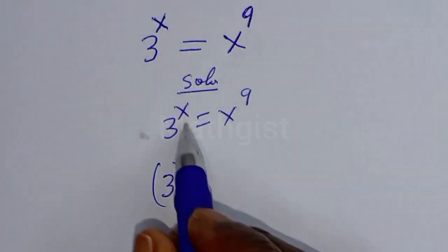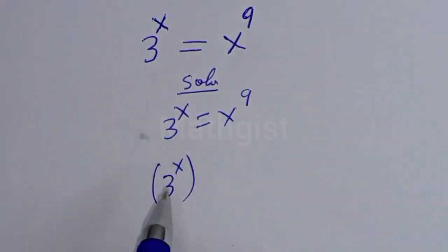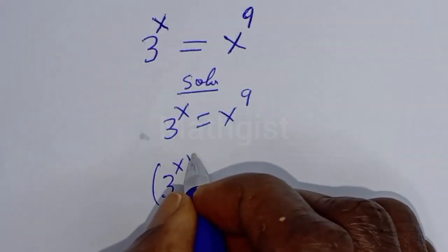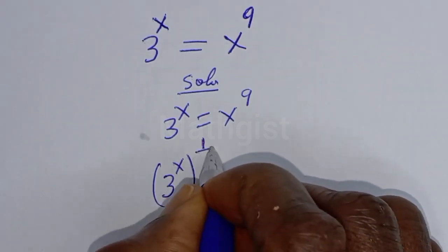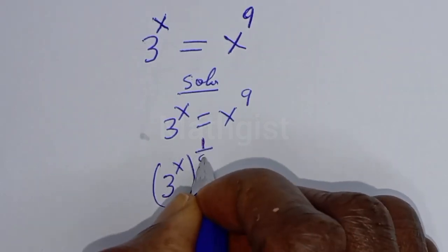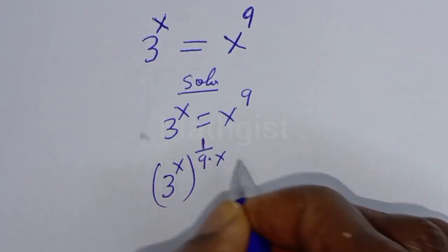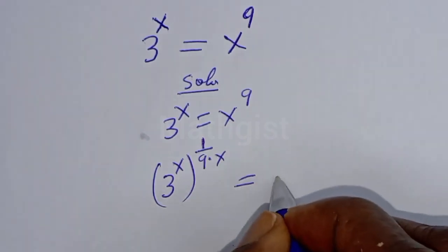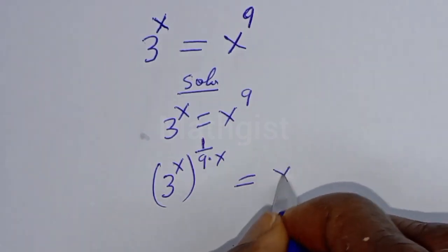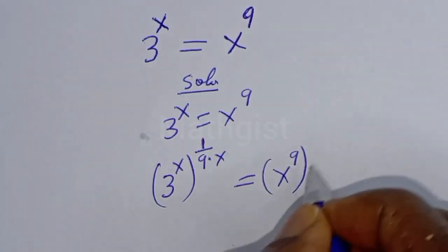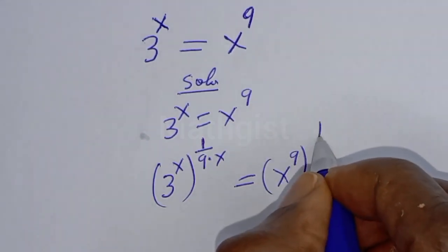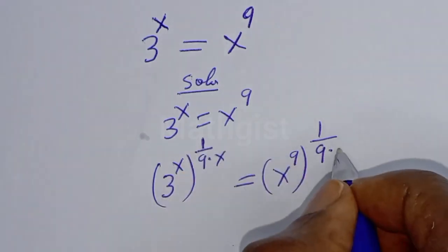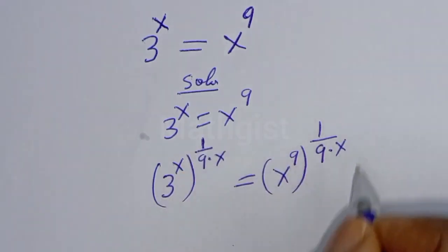Starting with t raised to power s, let's multiply the exponent of both sides by 1 over 9x. Then t to the power of 1 over 9 multiplied by s is equal to s raised to power 9 to the power of 1 over 9 multiplied by x.